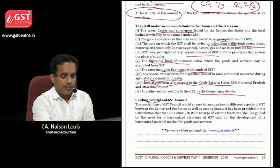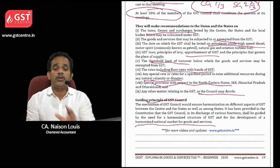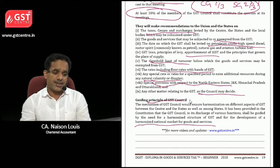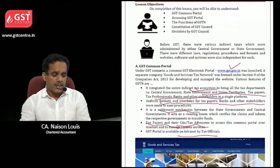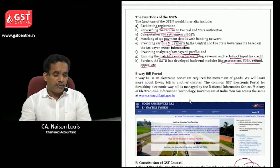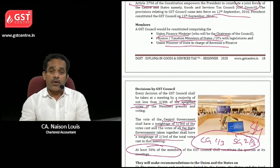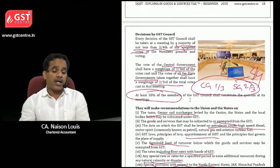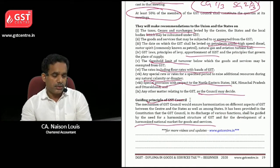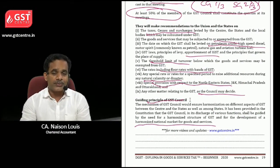The guiding principle of the GST Council is to ensure a harmonized national market for goods and services. In this chapter we covered the GST common portal, available websites, functions of the GST common portal, the constitution of the GST Council, weighted votes, quorum of 50 percent, and how various decisions are taken by the GST Council.